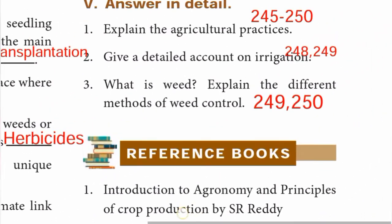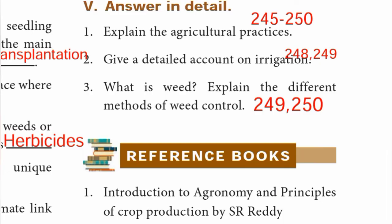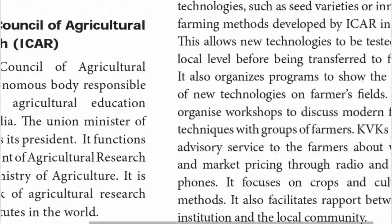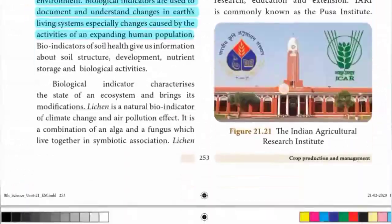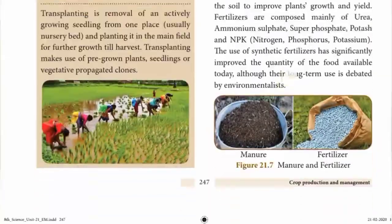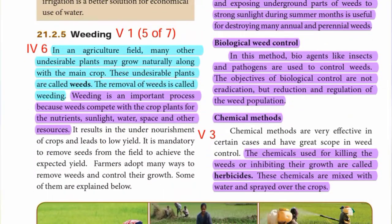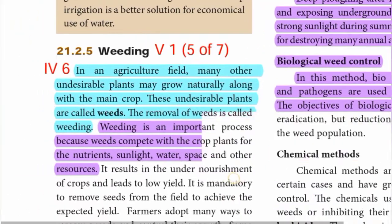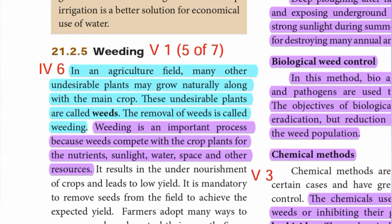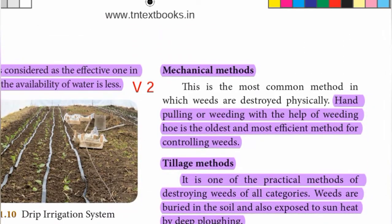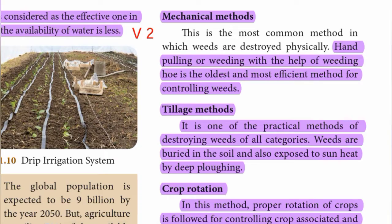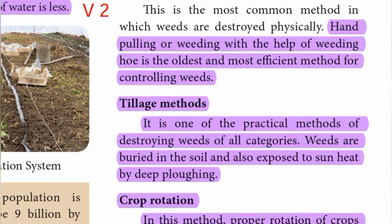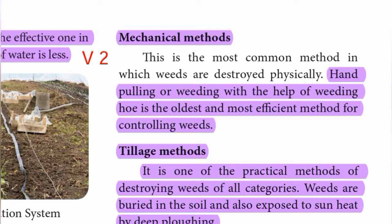Question three: What is weed? Explain the different methods of weed control. Page numbers 249 and 250. Weeding is an important process because weeds compete with the crop plants for nutrients, sunlight, water, space, and other resources. Mechanical methods: hand pulling or weeding with the help of a weeding hoe is the oldest and most efficient method for controlling weeds.